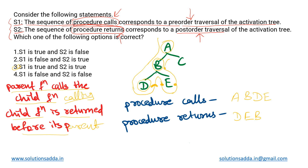Coming back to A and moving to its next right child, C — so C is called next. C has no children so it will simply return. Then from C we come back to A and return the final value. So we have traced out the orders in which the procedures are called and the orders in which the procedures are returned.